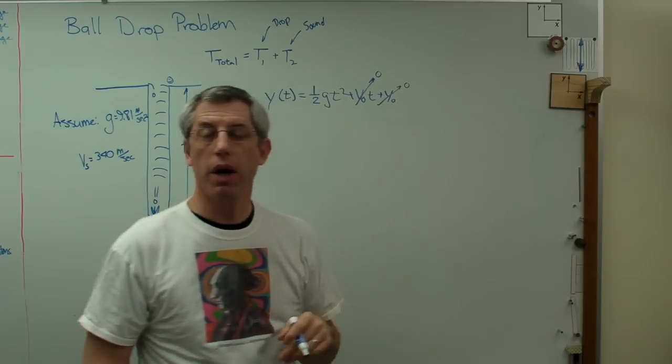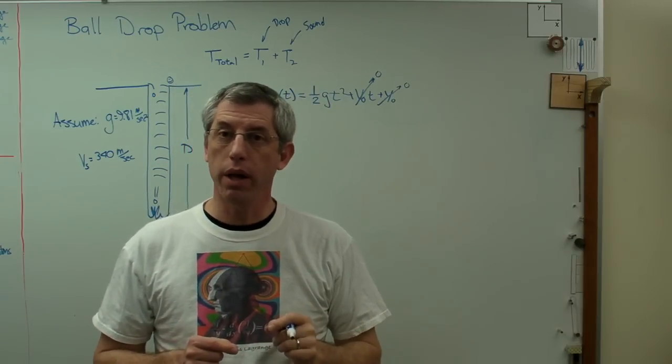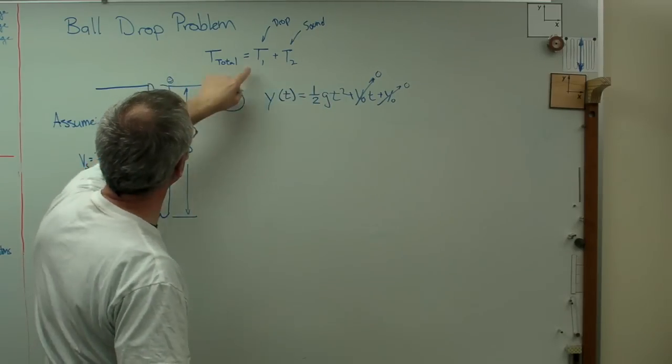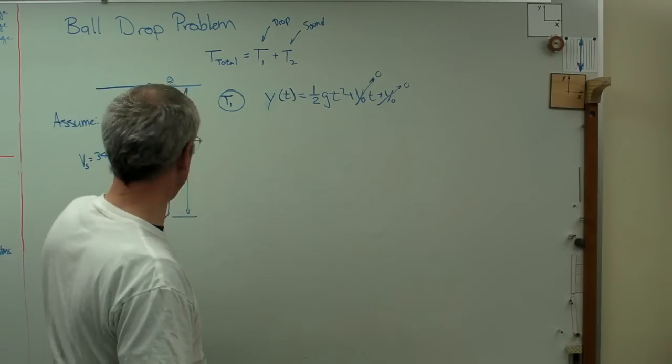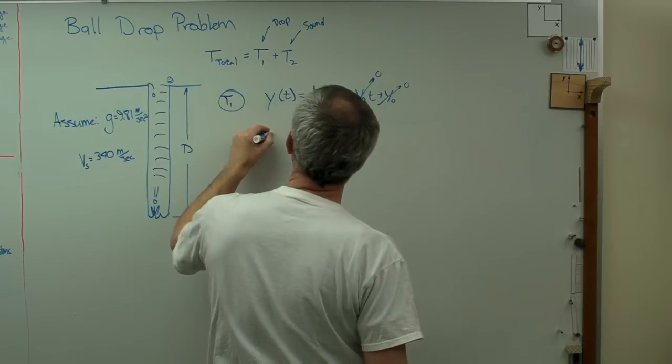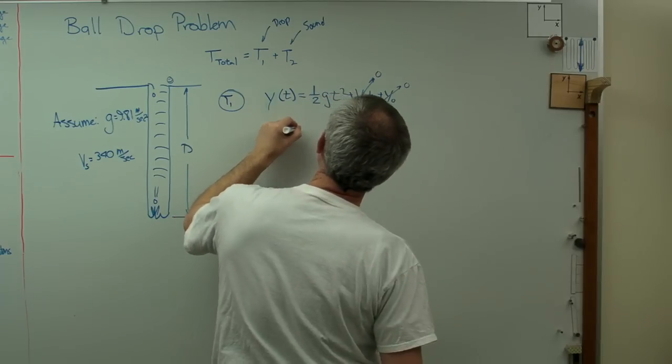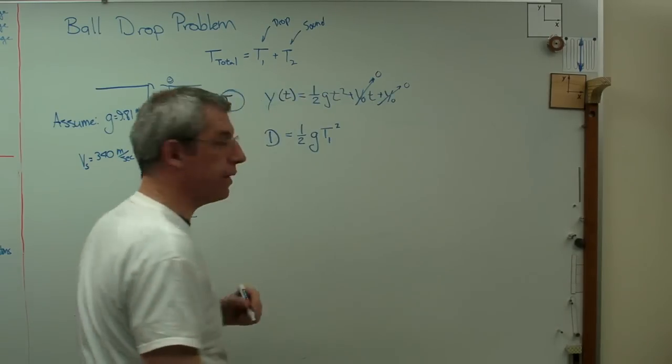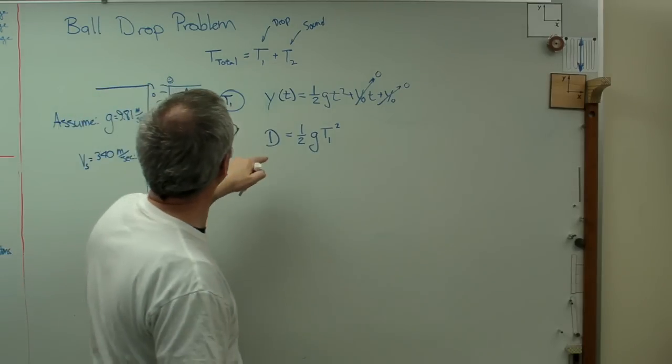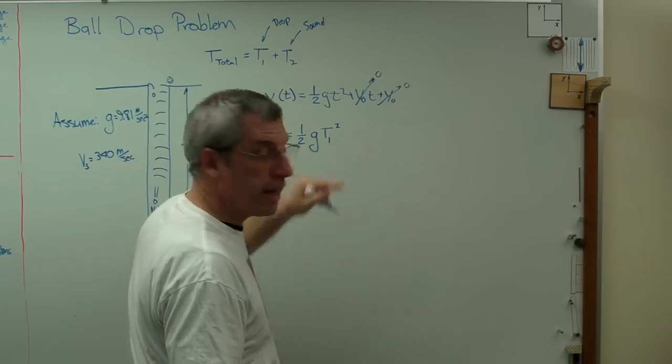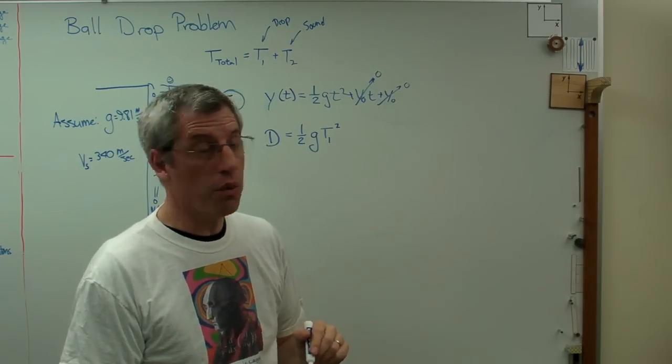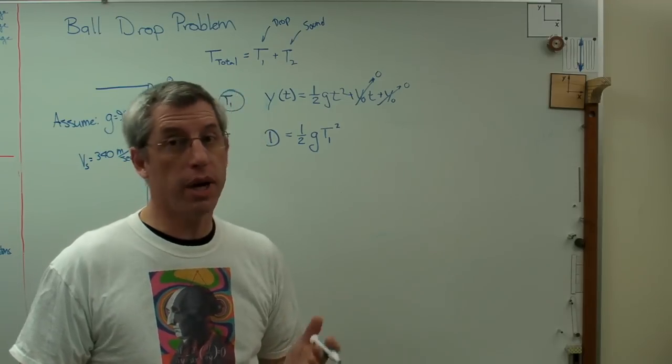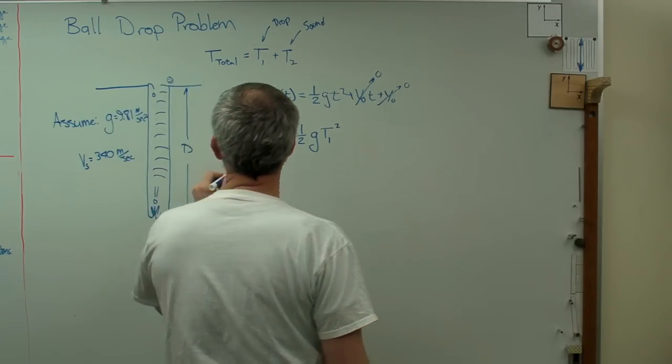At the exact instant when the rock hits the water, we know time t is t1 and that's distance d. Let's put those numbers in there: d equals one half g t1 squared. There's one expression, but I've got one equation and two unknowns. That's not going to cut it. If I have two unknowns, I need two equations.